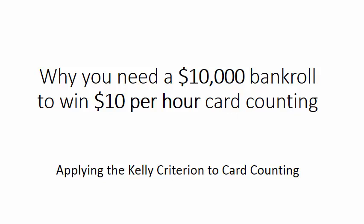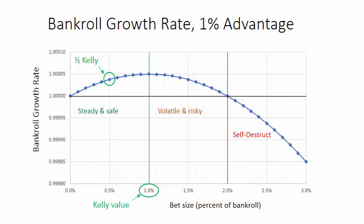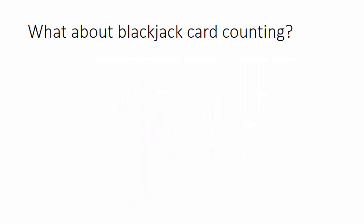Why you need a $10,000 bankroll to win $10 an hour card counting. Applying the Kelly Criterion to card counting. In part one of the video we saw that astute card counters aim for the region between one half the Kelly amount and the Kelly amount, because it gives the greatest possible bankroll growth rate consistent with safety. So what about applying the Kelly Criterion to card counting?